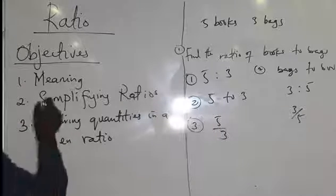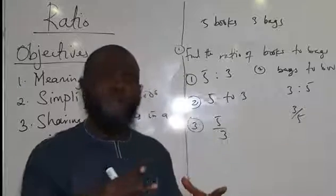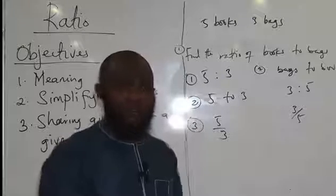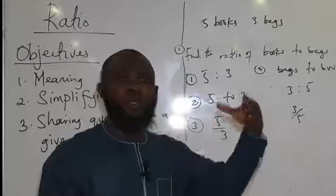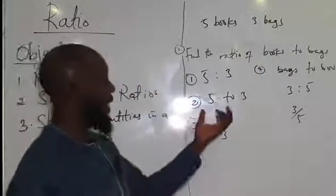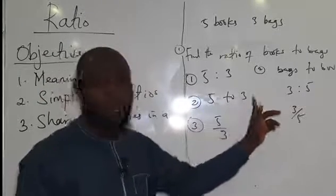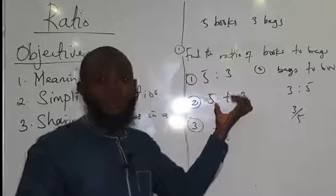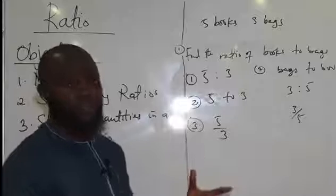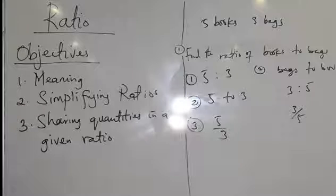When we talk about simplification of ratios, it's the same way we simplify fractions. When you simplify fractions, you reduce each to its lowest term — in such a way that there will be no factor that can divide both the numerator and denominator. The same thing here. We have 5 to 3; there is no factor that can divide both 5 and 3, so this has been simplified to its lowest term. So let's look at examples now.